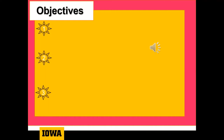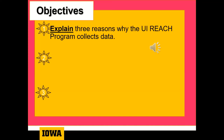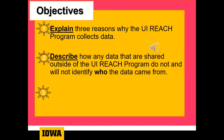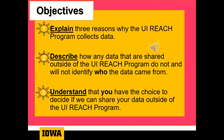I'm not sure I can guarantee that everyone will be dancing along to the data yay song by the end of this presentation, but I do want to make sure that each audience member, by the end of the presentation, is able to: number one, explain three reasons why the UI REACH program collects data; second, describe how any data shared outside of the UI REACH program will not identify who the data came from; and third, understand that you have the choice to decide if we can share your data outside of the UI REACH program.